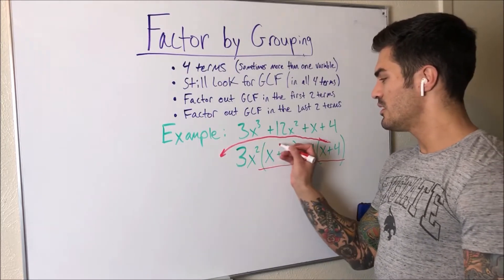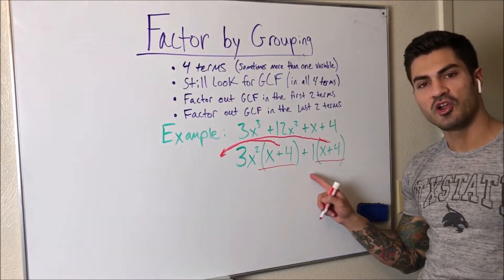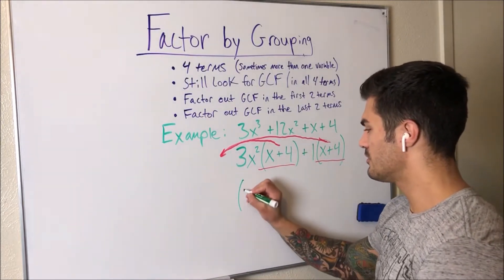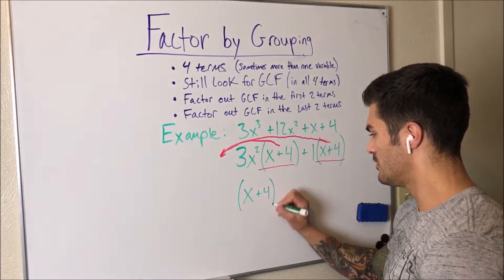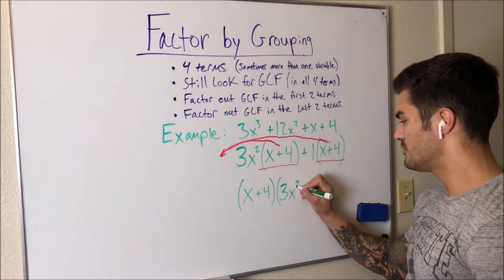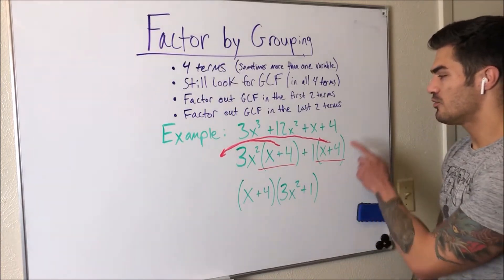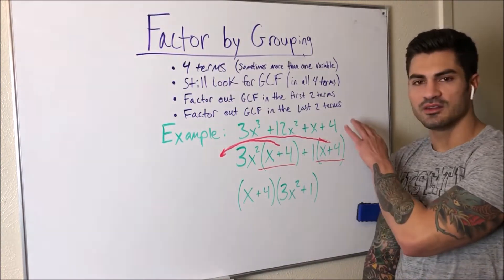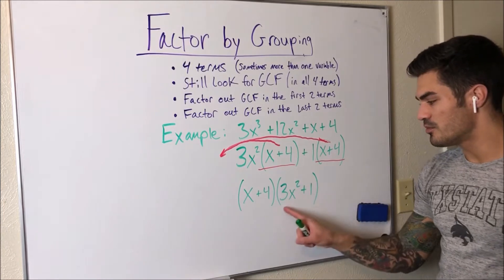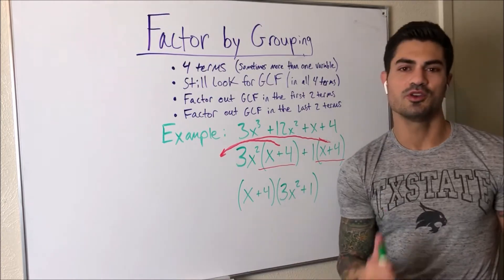So I take the X plus four out in front, and what I'm left with is 3X squared plus one. So the final factored form is (X plus four)(3X squared plus one). If you want to check this answer, you can FOIL this out and you should get right back to where we started.